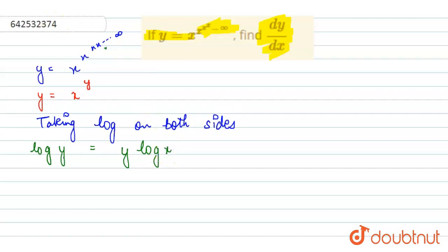So, we will differentiate. 1 upon y dy upon dx equals dy upon dx into log x plus y by x.